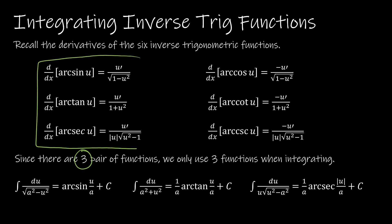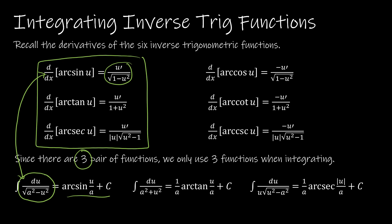We're looking at these three, and I just want you to recall that integrating is the inverse of differentiating. Notice the relationship: u prime over the square root of 1 minus u squared — if I'm integrating that form, I'm getting back to arc sine. The only difference is if there's an 'a' value, that obviously needs to be taken into account, which is what the integration formula reflects. So if you end up with a negative du, that's just going to give you a negative arc sine.